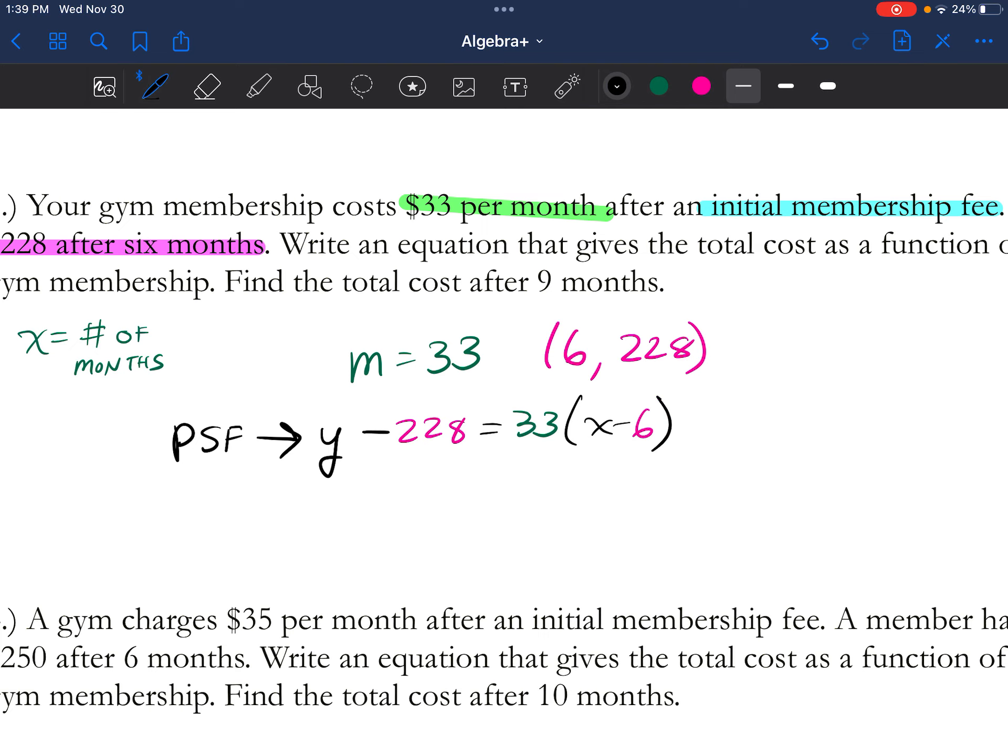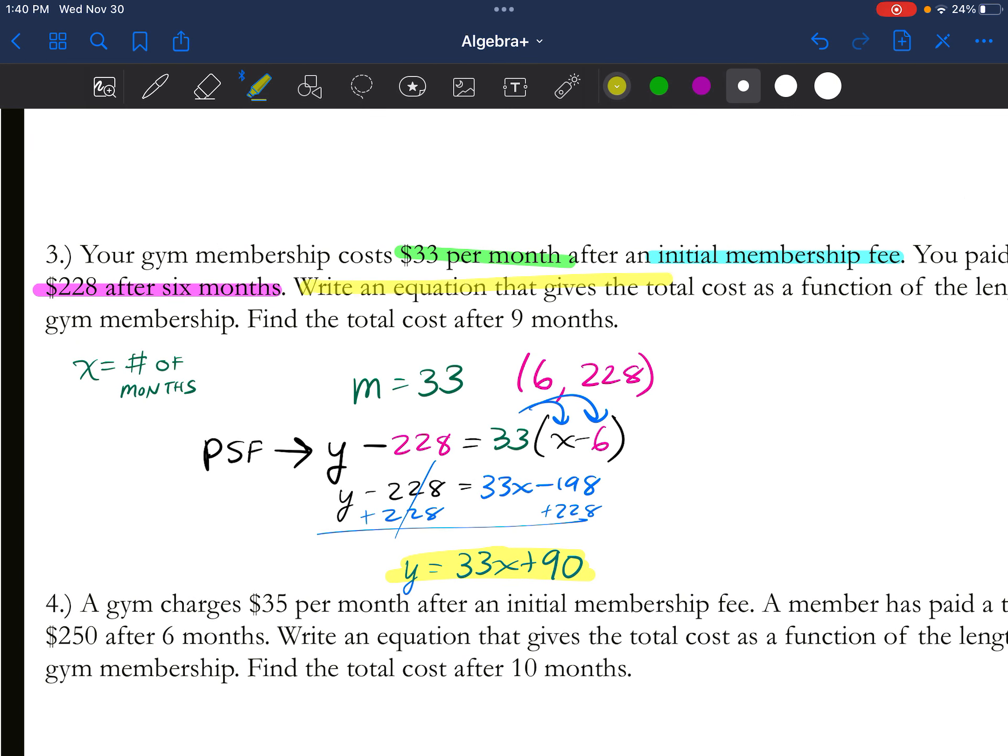Well, we can put this in slope-intercept format by distributing and then adding. So we get y minus 228 equals, let's distribute, you get 33x minus 198 because you distribute it. Now I'm going to add 228. Use your calculator if you need to, but y equals 33x plus 90. Well, guess what, we just found our equation. And it does say to write the equation at the total cost as a function of the gym membership. There's our equation.